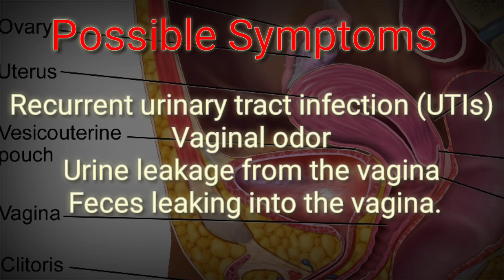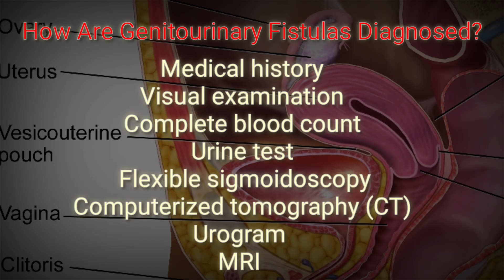Possible symptoms include recurrent urinary tract infections (UTIs), vaginal odor, urine leakage from the vagina, and feces leaking into the vagina. It is possible to have genitourinary fistulas with little or no symptoms. Diagnosis involves medical history, visual examination, complete blood count, a urine test, flexible sigmoidoscopy, CT urogram, and MRI.